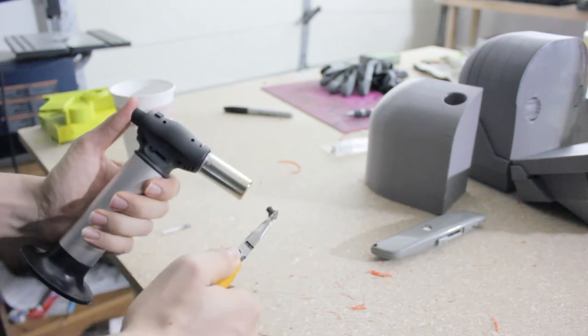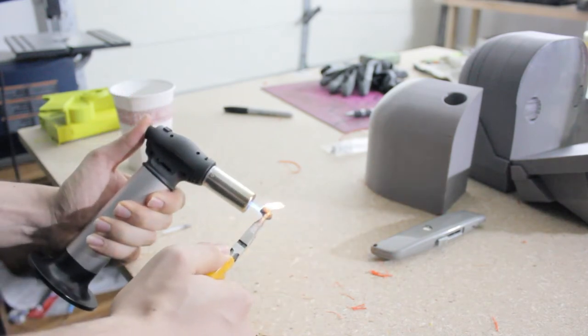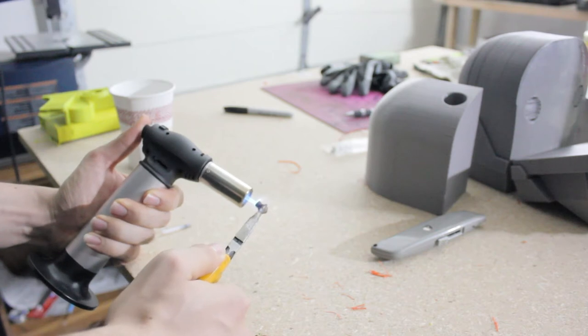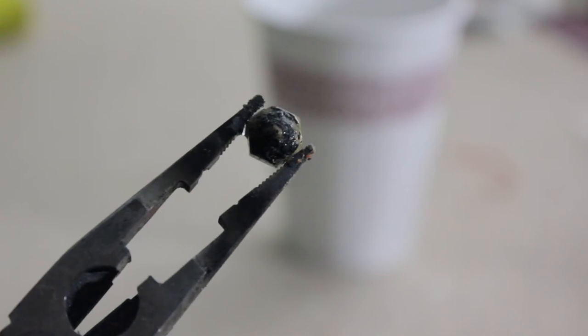You'll want to hold the nozzle in a way where you're not touching the metal threads where it screws into the heater block. If you are, you risk ruining them while the nozzle metal is soft. Now hold the flame close to the nozzle and make sure the flame is super concentrated to heat it up quickly.